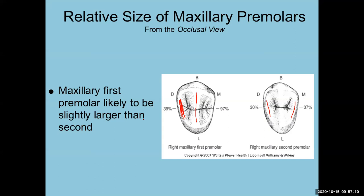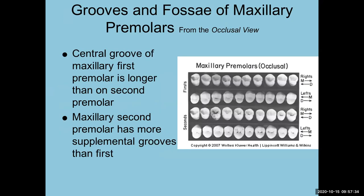For tooth drawings, you should label the transverse ridges but not every triangular ridge individually — every cusp has one. The key is identifying a transverse ridge versus an oblique ridge, as that's commonly on board exam questions. For the mesial developmental depression, I want to see it drawn even if you don't label it. The three takeaways for the maxillary first premolar: the mesial marginal groove over the mesial marginal ridge, the mesial depression going up the root, and the bifurcation.